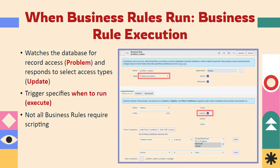For executing a business rule, it requires defining what table it will be executed on. Here you can see we have defined the table as 'problem.' We also define when it executes — we can run it on insert, update, delete, or query. Right now it is selected as update, just as an example of how we can select when to run.